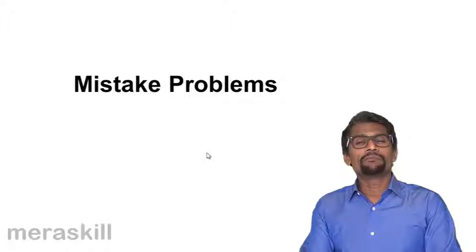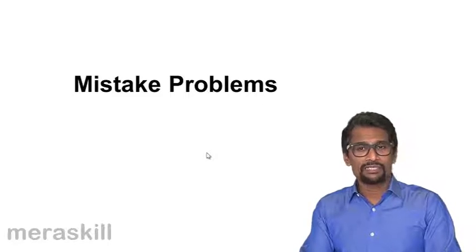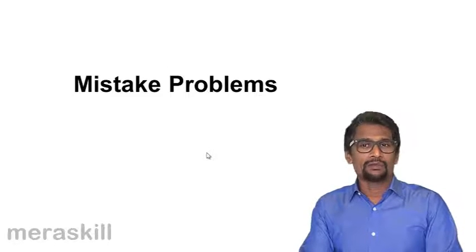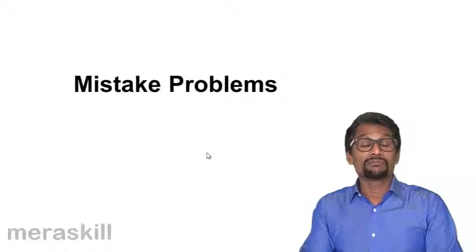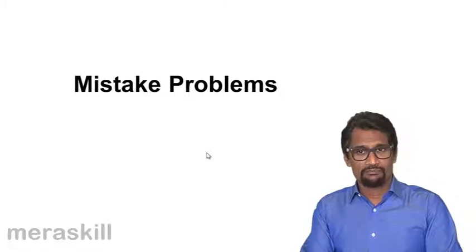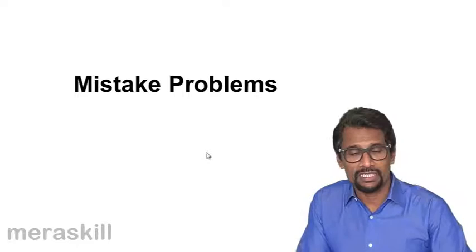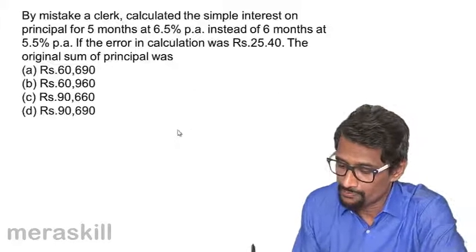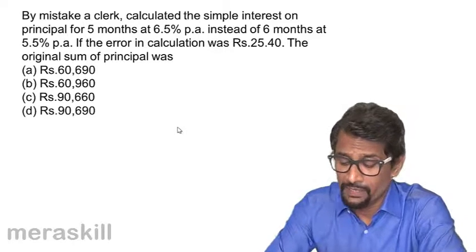Furthermore, we have the concept of mistake problems, which I had mentioned earlier. These are typical cases wherein sometimes a person, accountant, or somebody makes a mistake in calculating the interest and there is a correction made. Then how does the interest rate change? And from that, various unknowns could be found out. Say, for example,